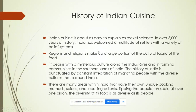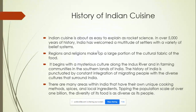Indian cuisine is about as easy to explain as rocket science because of all the influence on this region over 5,000 years. Regions and religions make up a large portion of the fabric of the food. The food is so heavily influenced by culture and religion. As you saw in the video, the culture of India begins along the Indus River in farming communities in the southern lands. The history of India is punctuated by a constant integration and migration of people with different cultures.